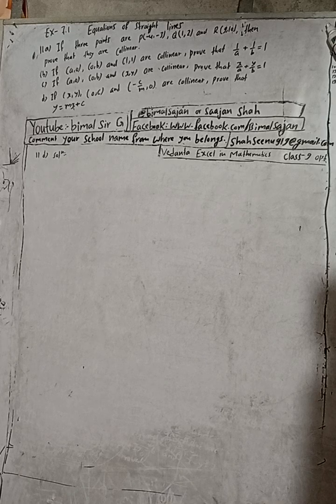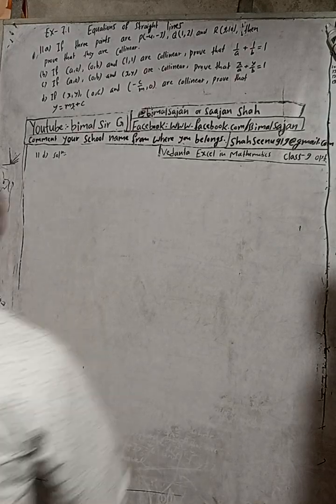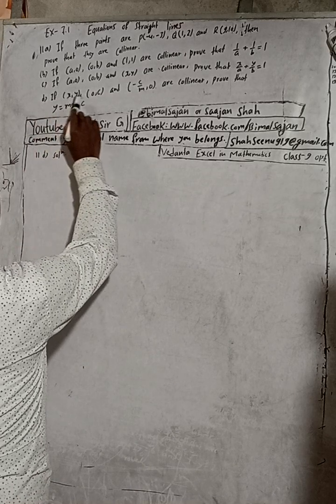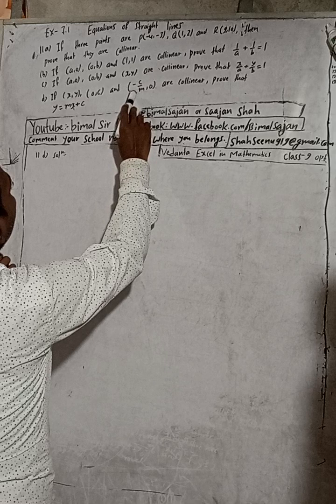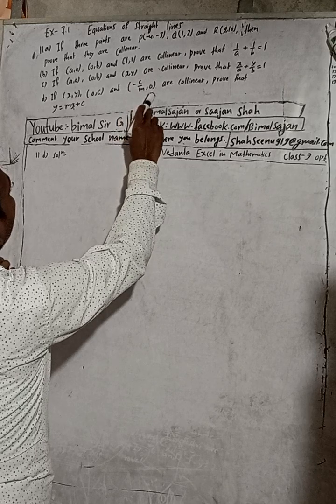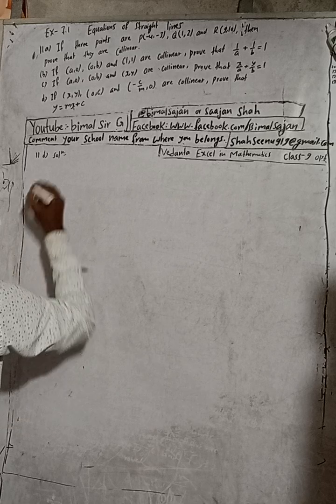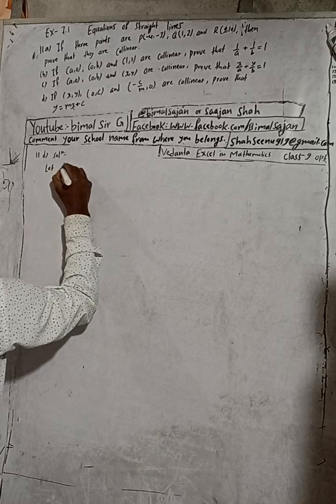The question states: if the points (x, y), (0, c), and (-c/m, 0) are given, let the points be A, B, and C respectively.